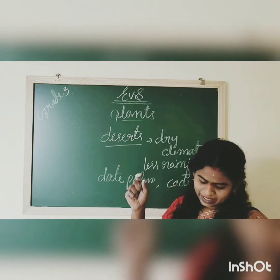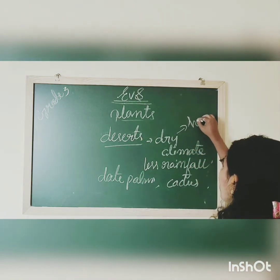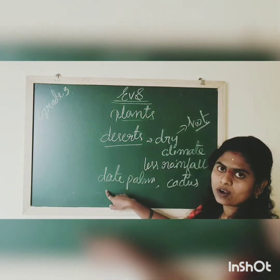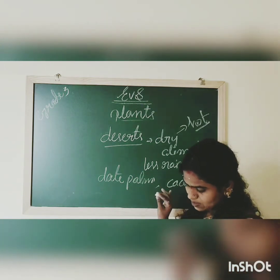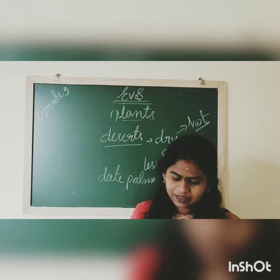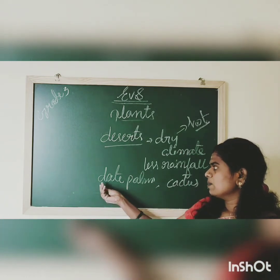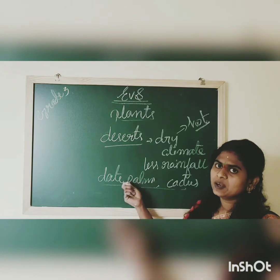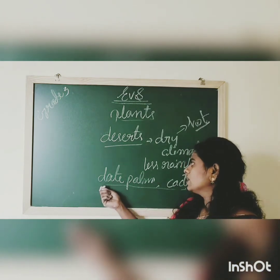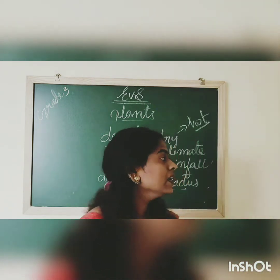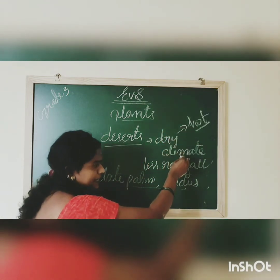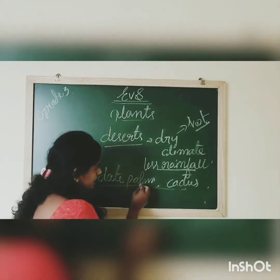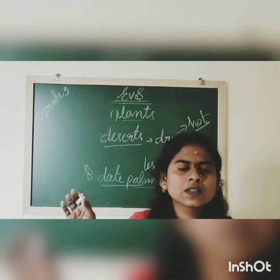Desert plants have a very hot and dry climate. There is less rainfall. Date palms and cactus are the plants that can live in such conditions since they are adapted to less rainfall. They are the desert plants. If you are asked to name desert plants, the answer is date palms and cactus.